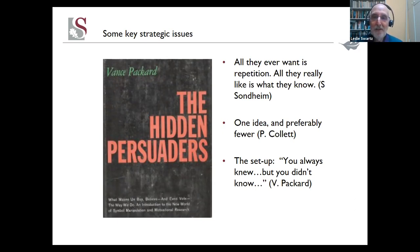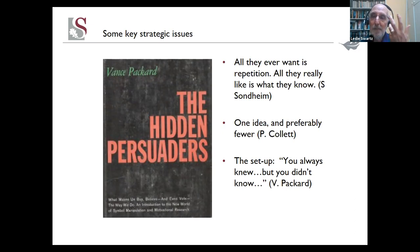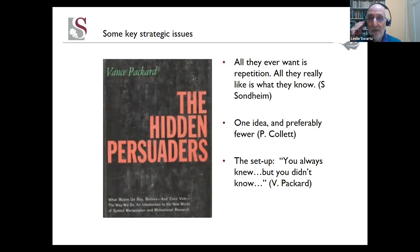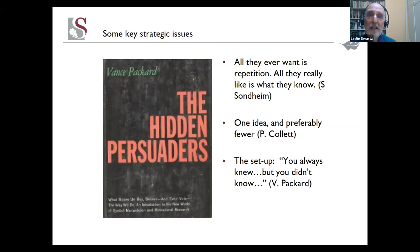Something you will have heard many times is that in order to publish in academic journals, you have to be original — saying something new. To some extent that's true, and to some extent it's not. Stephen Sondheim writes Broadway musicals and has a song talking about trying to sell his musicals to investors, where he mentions they always say they want original things, but actually all they ever want is repetition — all they really like is what they know. To some extent, people who read academic journals want that as well.